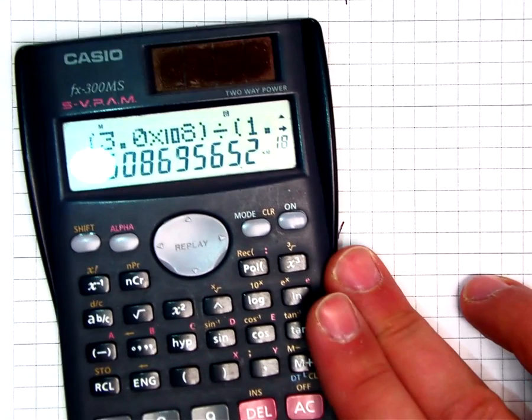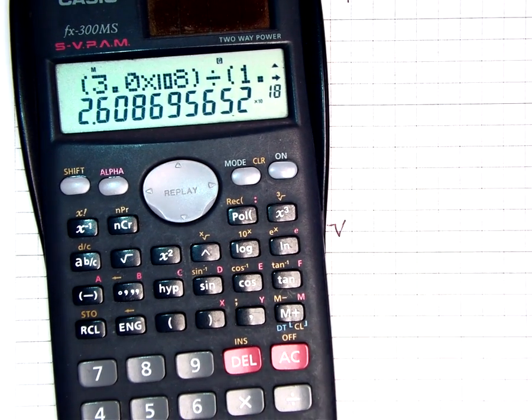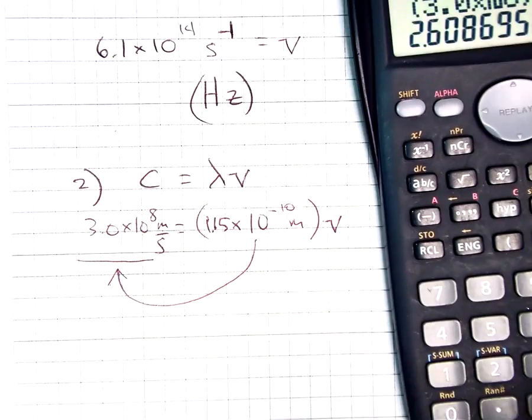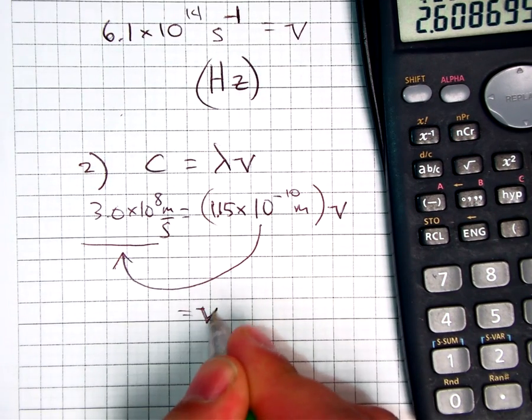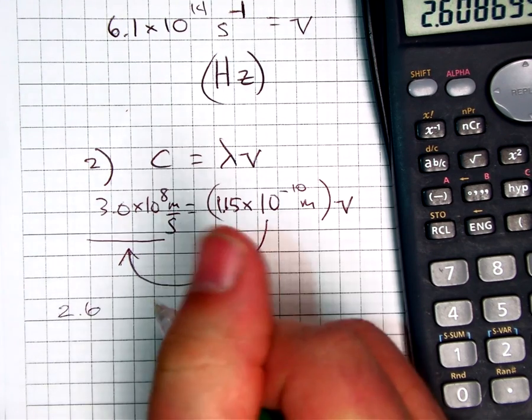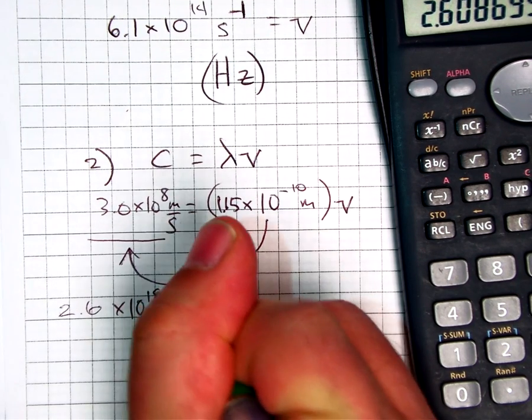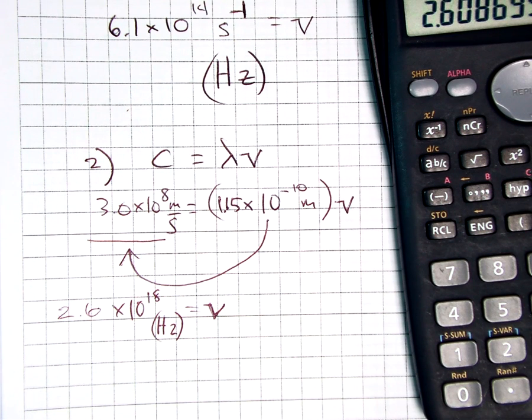And I get, let's get out of the glare there. 2.60 times 10 to the, what is that, 18th up there? 18th power. So, for my answer, which I'll put down here, I'll put frequency symbol. 2.6 times 10 to the 18th hertz. Hz, or s to the minus 1.